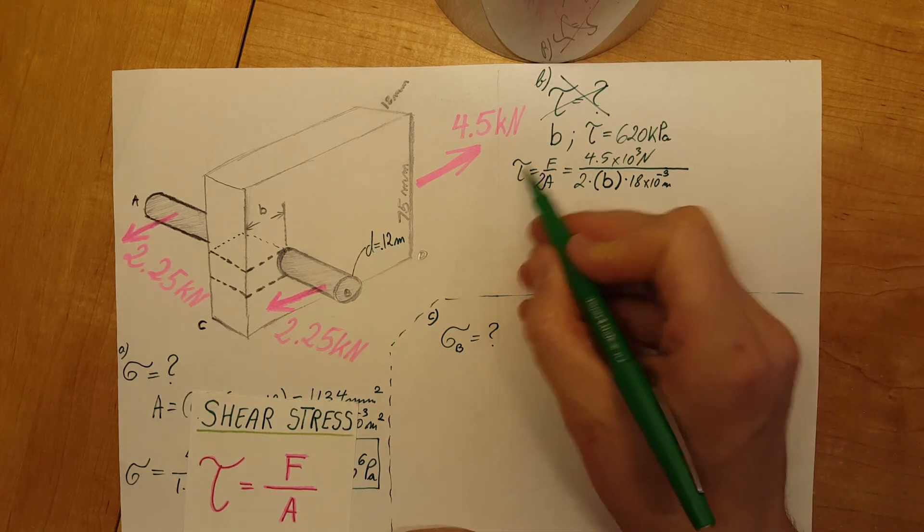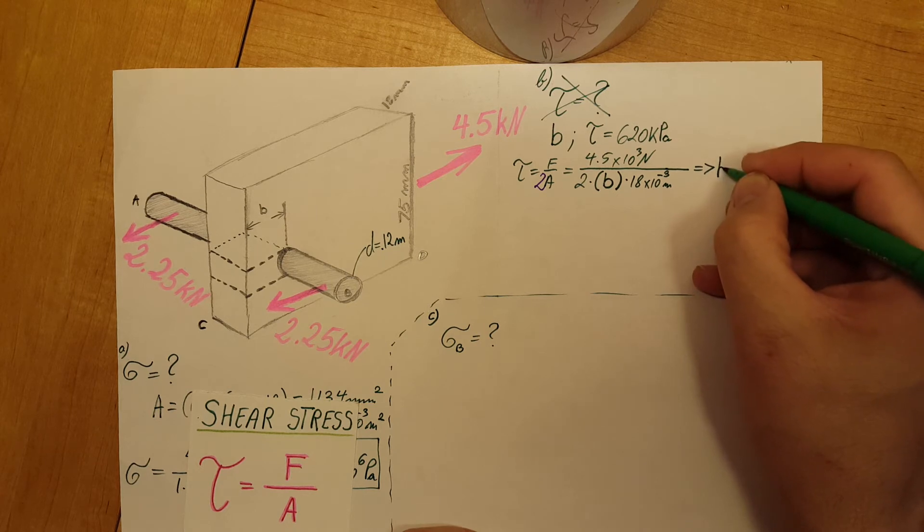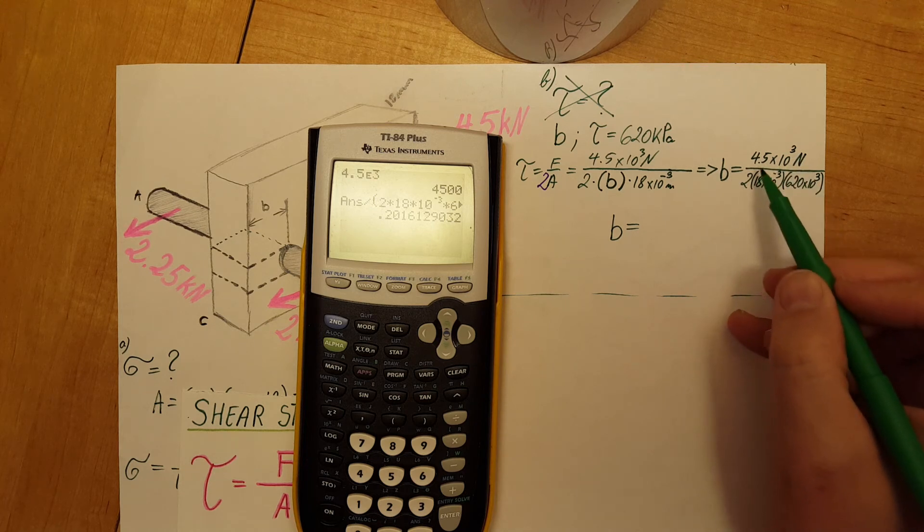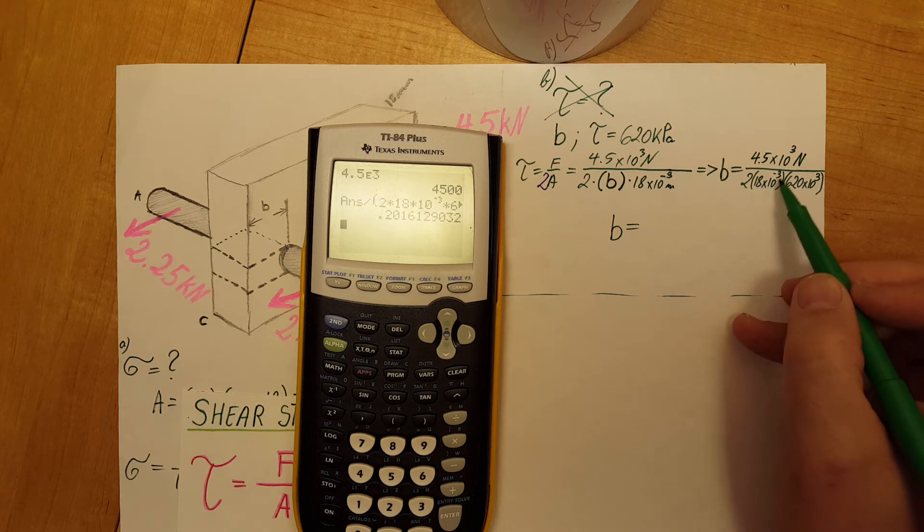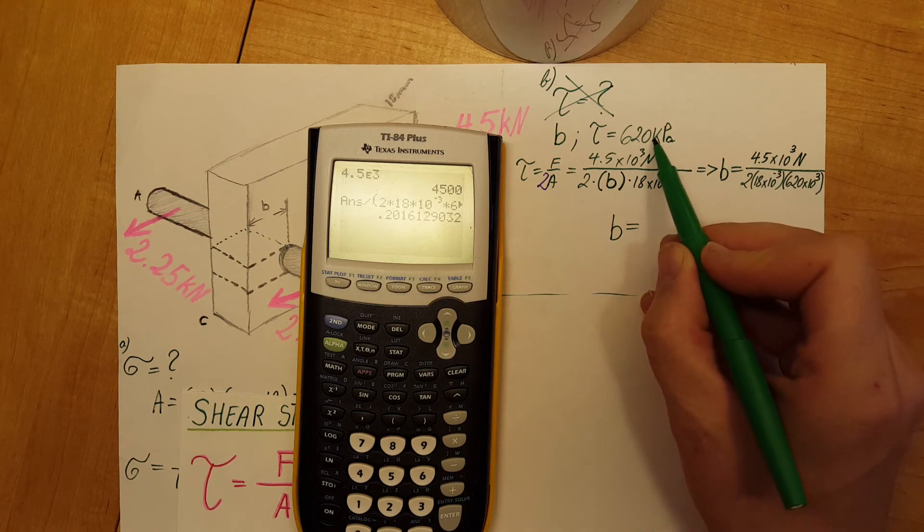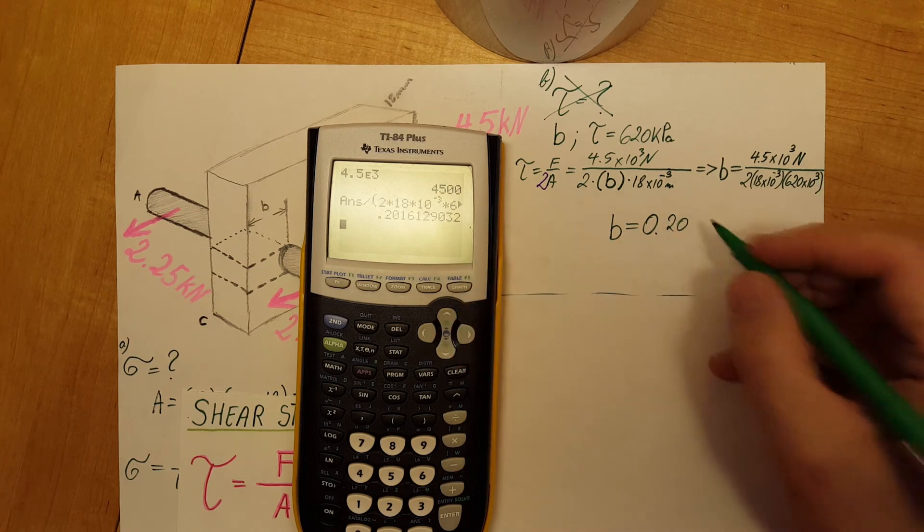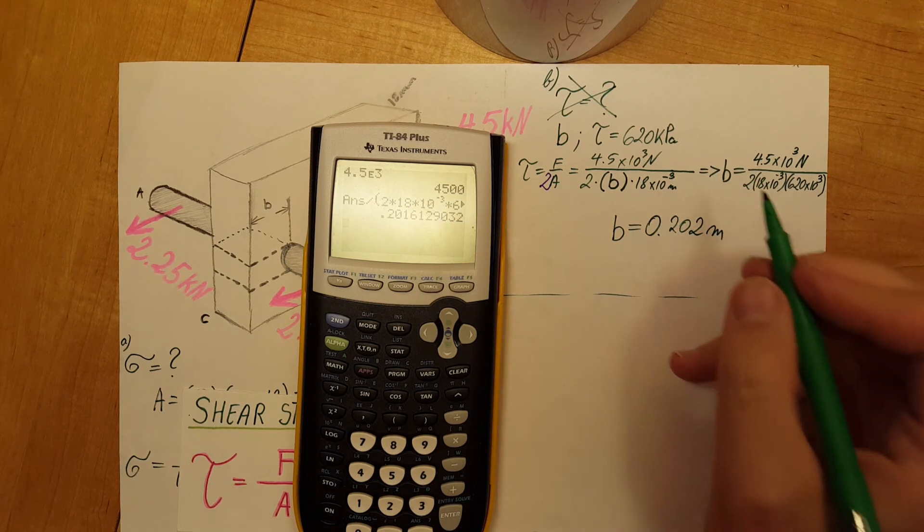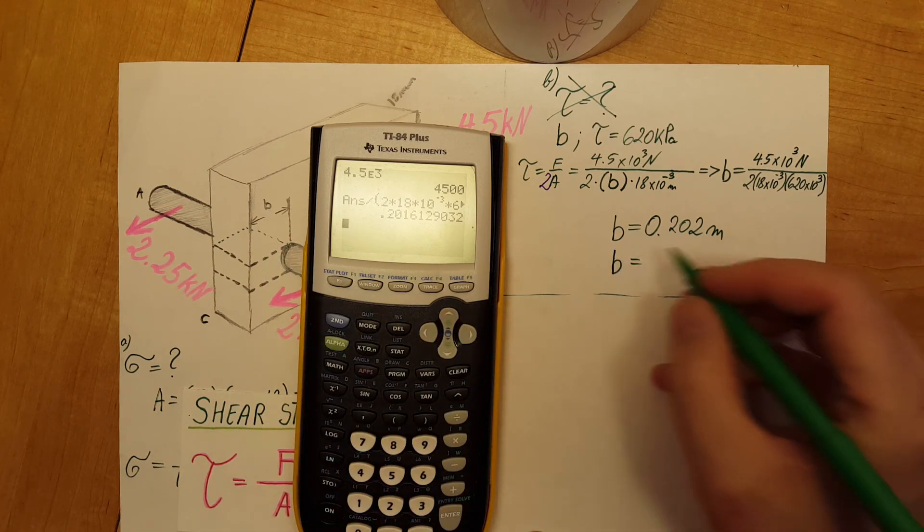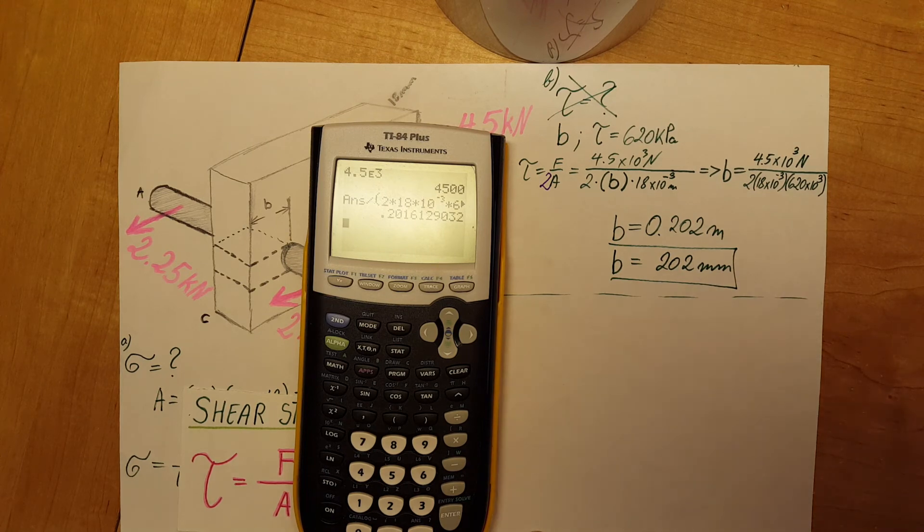Now we know tau, all we have to do is solve for b. That's 4.5 times 10 to the third newtons divided by two times the area, 18 times 10 to the negative 3, and we have tau, 620 times 10 to the third pascals. With the calculator we find it is 0.202 meters, and we can convert it back to millimeters because that's how all the measurements on the wood are given. So that's going to give us 202 millimeters, and there's our value for part B.